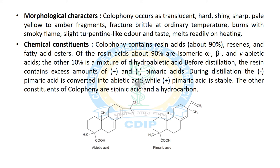Now we will discuss the chemical constituents found in Colophony. It contains resin acids, resins and fatty esters. It also contains alpha, beta and gamma abietic acid and a mixture of dihydroabietic acid. On distillation it converts into pyroabietic acids.